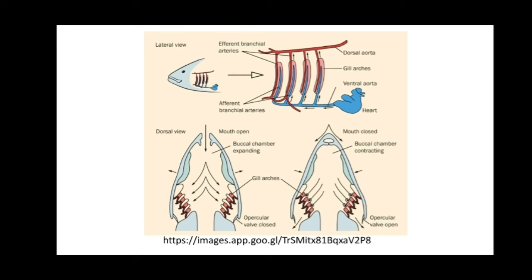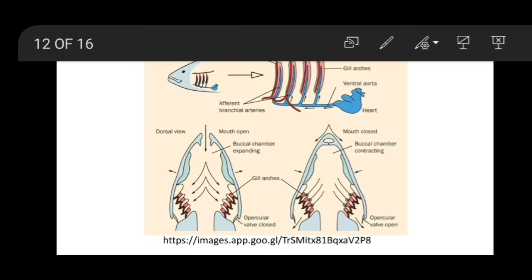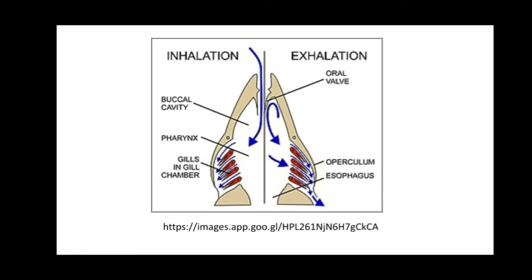You can see the gill arches, heart, and ventral aorta. When the mouth is open, water enters — this is inhalation — and the buccal chamber expands. The upper gill walls are closed. When the mouth closes, the buccal chamber contracts and the upper gill walls open. The gill lamella has an extensive system of sinusoids which receives venous blood from the afferent branchial artery, and it passes into the efferent or epibranchial artery.